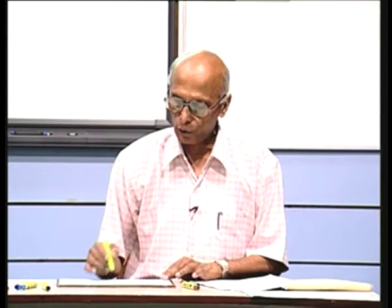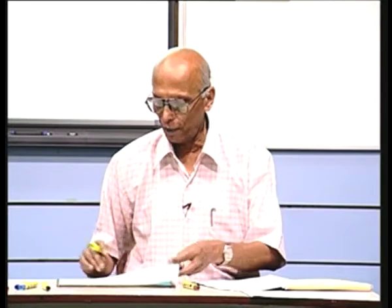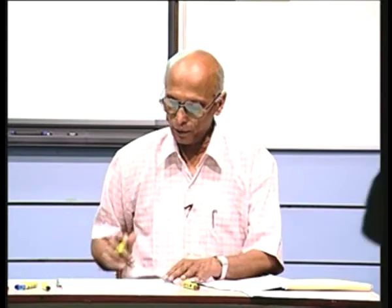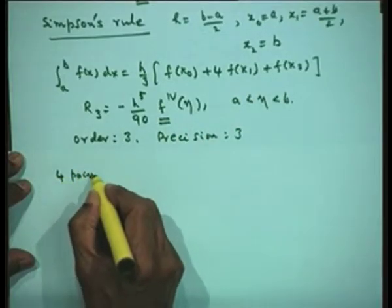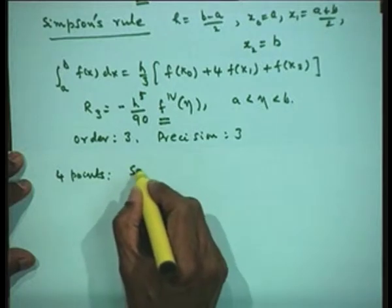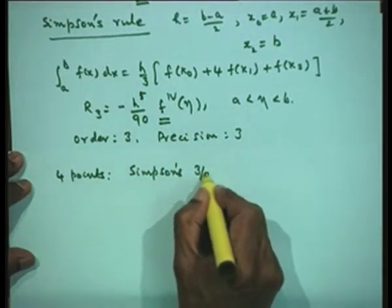Higher-order Newton-Cotes formulas can also be used — instead of three points we can use four, five points, and so on. The next formula using four points is called the Simpson's three-eighths rule.